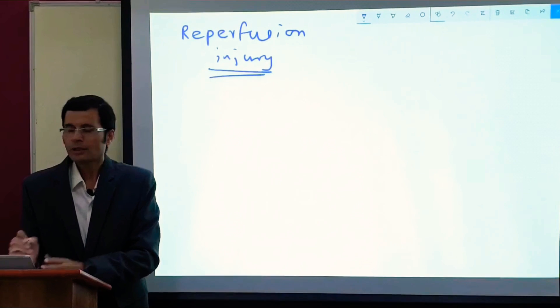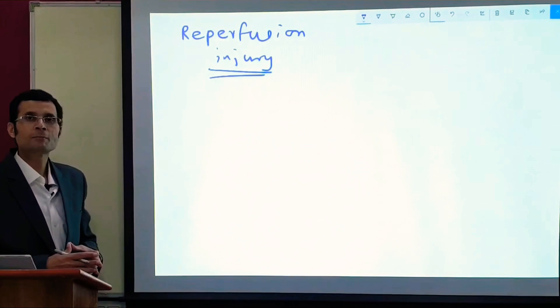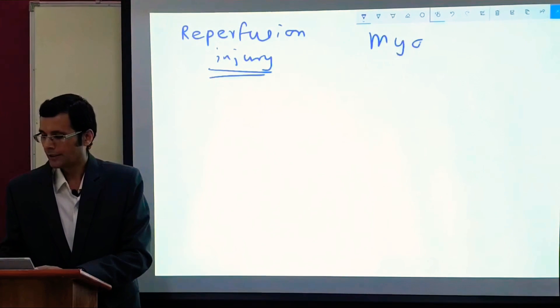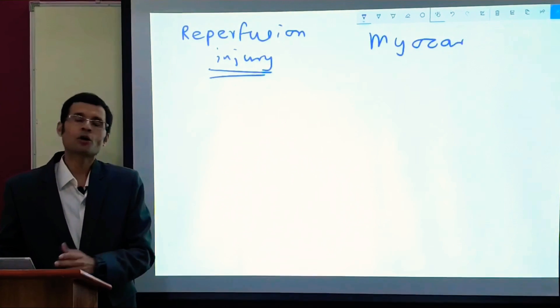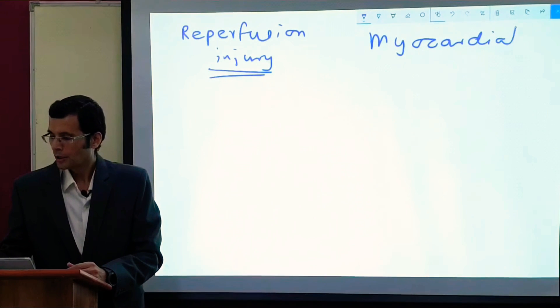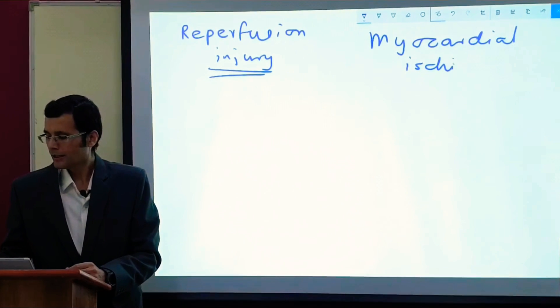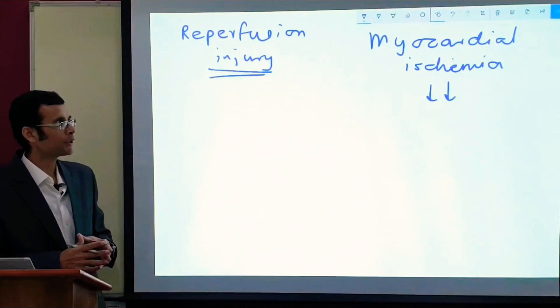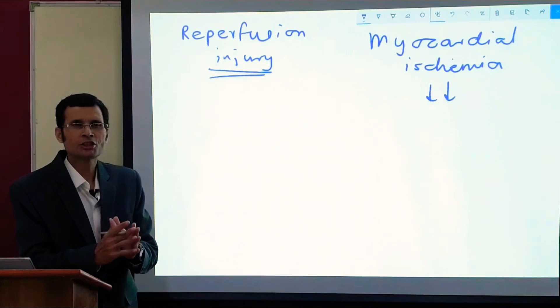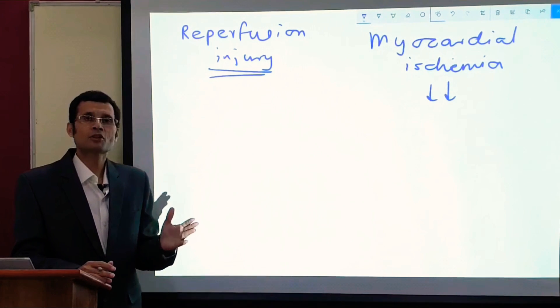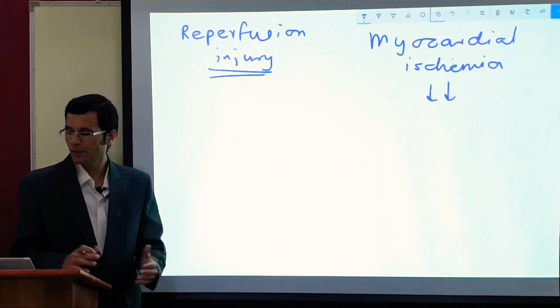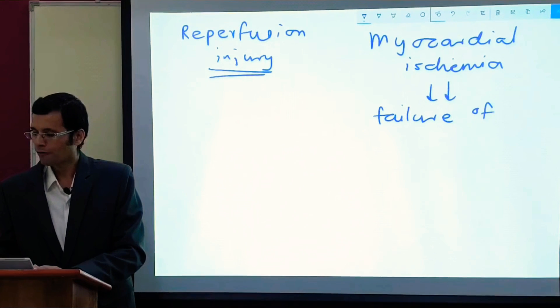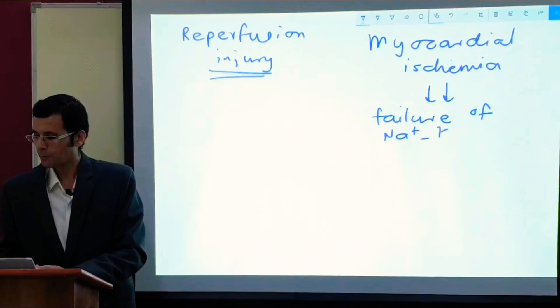First thing that needs to be understood clearly is that whenever there is ischemia, in the case of myocardium or any other tissue, myocardial ischemia in this case will result in failure of the sodium-potassium pump. The first function to be hit is that of the sodium-potassium pump, whether it is hypoxia or ischemia. So there would be failure of the sodium-potassium pump.